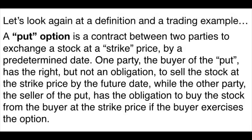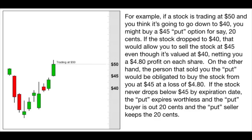Let's look again at a definition and a trading example. A put option is a contract between two parties to exchange a stock or an ETF at a strike price by a predetermined date. One party — the buyer of the put — has the right but not an obligation to sell the stock at the strike price by the future date. The other party — the seller of the put — has the obligation to buy the stock from the buyer at the strike price if the buyer exercises the option.